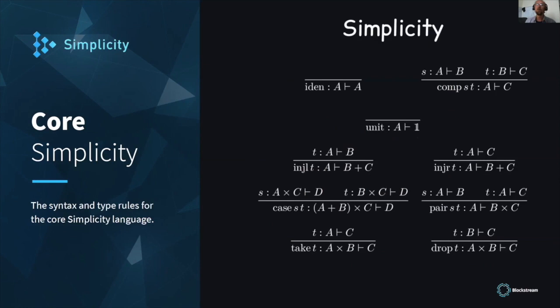What is simple about Simplicity is the semantics. It's a very low-level language at its core, and there are nine operators. There's a unit type, which is below a boolean — it's a unitary value because it only holds one value, i.e., true. Then there's a type function composition, so you can compose two functions. You can augment the domain of a type to the left or right, which is inject left and inject right. The case statement, which is a kind of if statement.